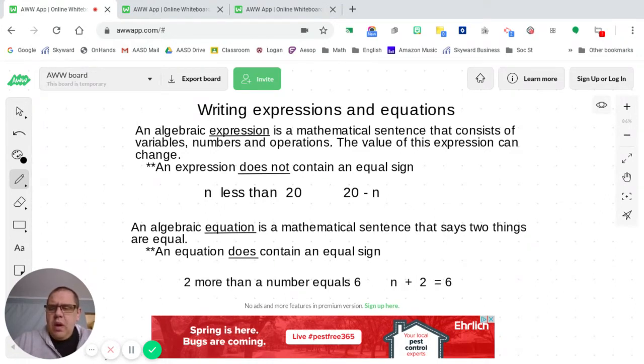So here's an example. Two more than a number equals six. Now, did you notice how I paused when I read that? And what I always tell my students is I sort of chunked my words as I read. Two more than a number equals six.